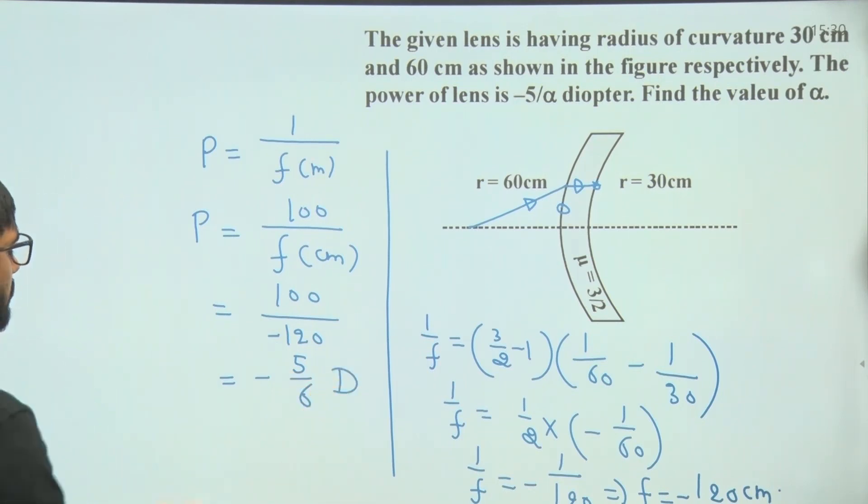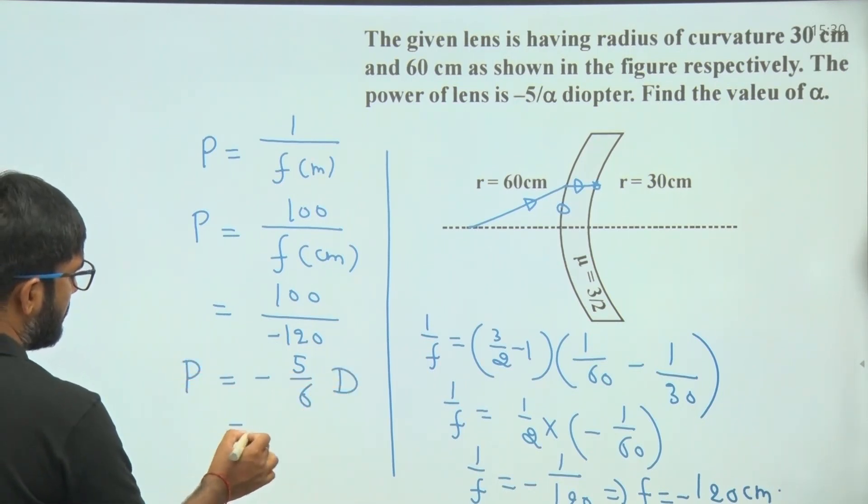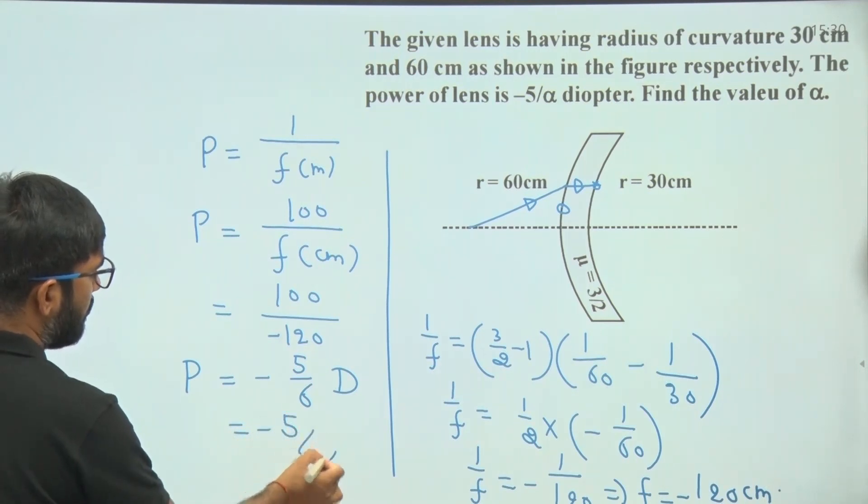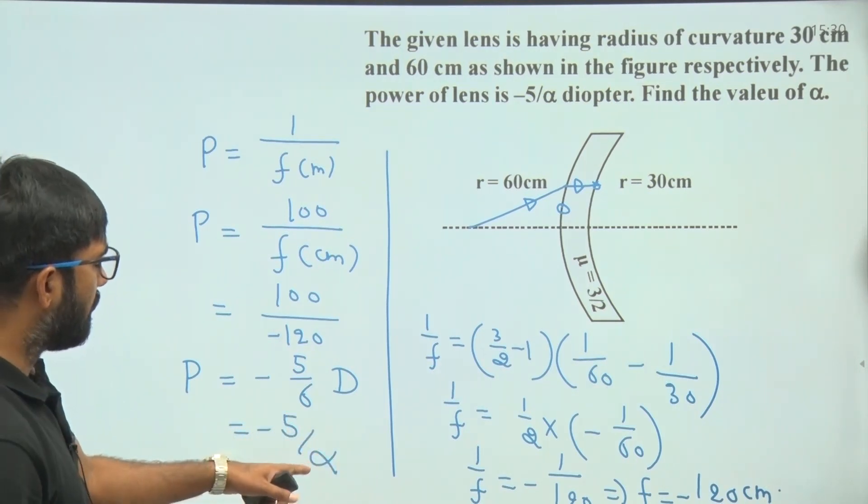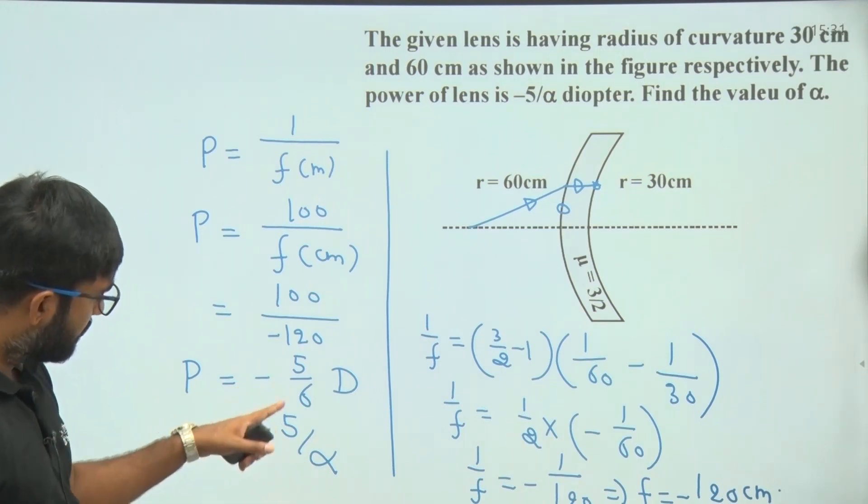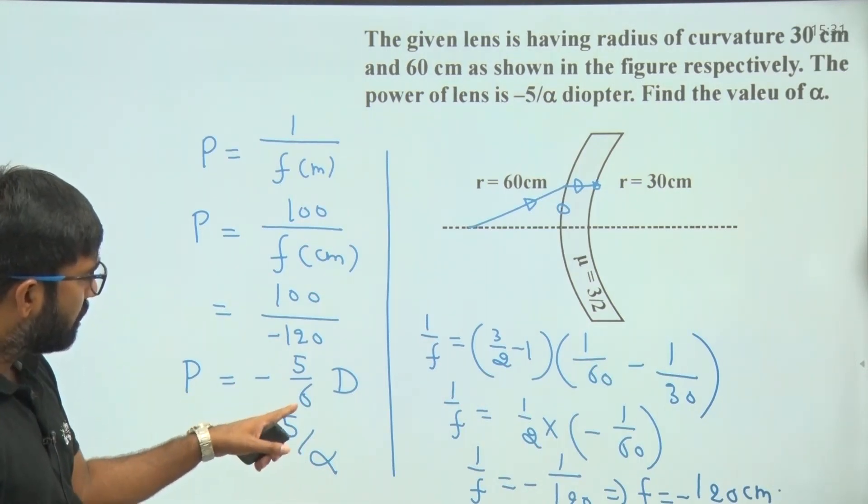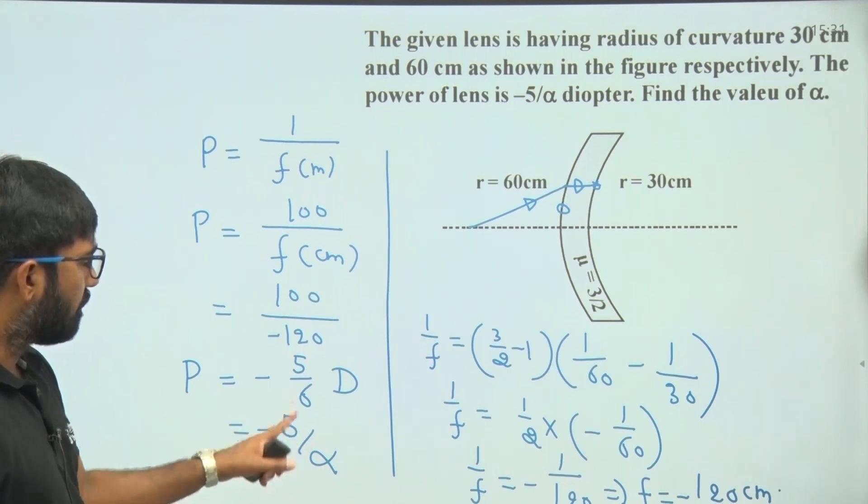According to the question, this power of the lens is given by minus 5 by alpha diopter. We have to find out the value of alpha. Hence, comparing this with minus 5 by 6 diopter, we get the value of alpha as 6.